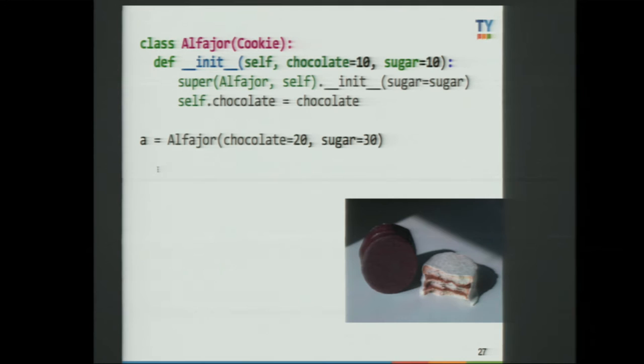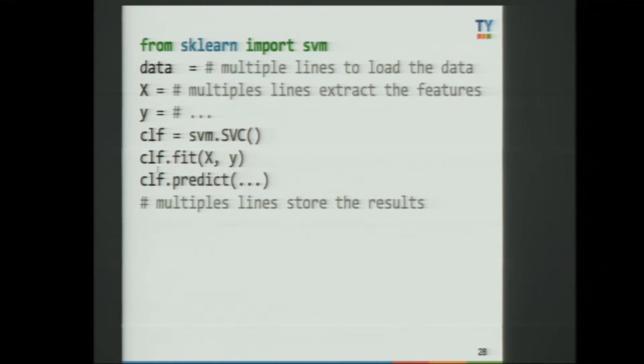One of the key concepts in object-oriented programming is that you can subtype — you can specialize and extend one class to make it do something special. For example, Alfajor is just a type of cookie eaten in Spain and South America. With this example, I extend the cookie class and add additional attributes. When you're working in Jupyter or IPython and calling scikit-learn, many of those statements involve calling objects, creating objects, and interacting with objects. You have to be aware of what you're doing and how you can use that to your advantage.